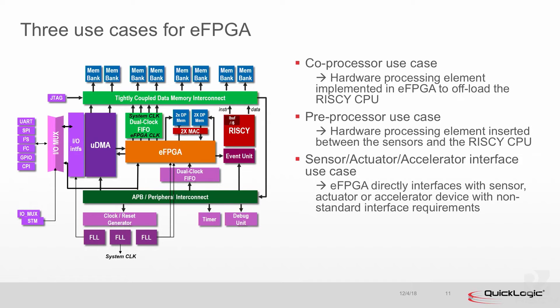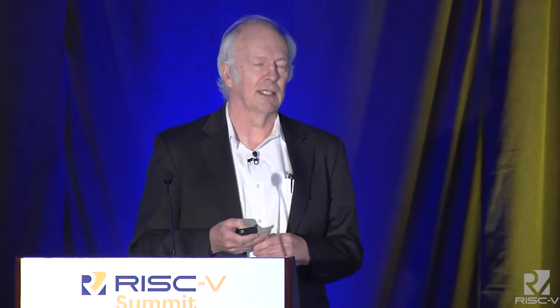What are the use cases for EFPGA? There are three I'll talk about today. First, a coprocessor use case: a hardware processing element implemented in the FPGA to offload the RISC-V CPU — though I think this will be a rarer case since there are plenty of hardware processing elements you can buy today. Second, a preprocessor use case: the hardware processing element is inserted between the sensors and the RISC-V CPU — what Jonathan Rose calls bump-in-the-wire processing, or stream processing. Third, a sensor/actuator/accelerator interface use case: the EFPGA directly interfaces with some new sensor, actuator, or accelerator that has non-standard interface requirements.